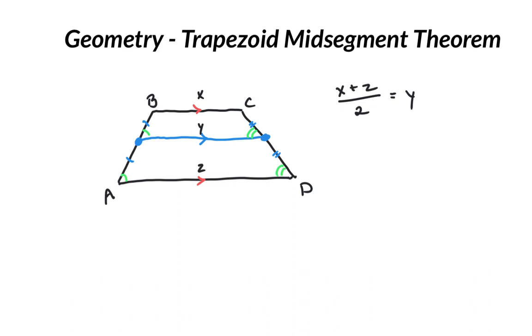If we put some lengths to this, for example, let's say this was 12 and this was 18. We could figure out y by finding the average: 10 plus 18 over 2 is 14, so this side length is 14.